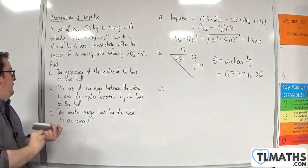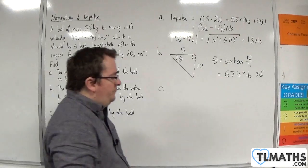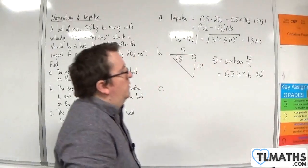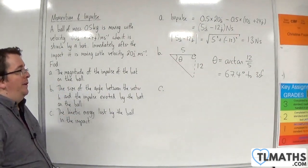So part C. The kinetic energy lost by the ball in the impact. So the kinetic energy formula is 1 half mv squared.